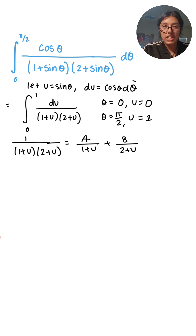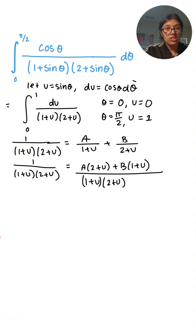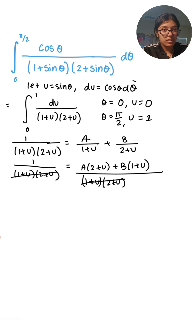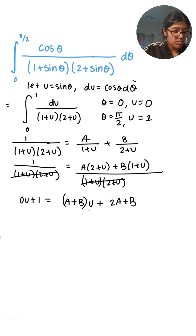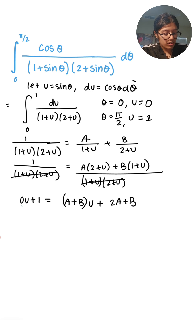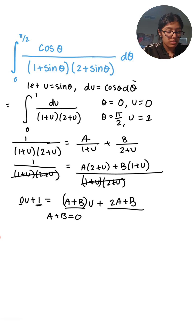I'm going to simplify the right side by taking the common denominator. The denominator on both sides is the same, so I'll cancel them out and rewrite. After expanding and grouping terms with u and terms without u, I see that on the left side we have 0·u, so A plus B should equal 0. The constant on the left is 1, and on the right it's 2A plus B, so those two must be equal.